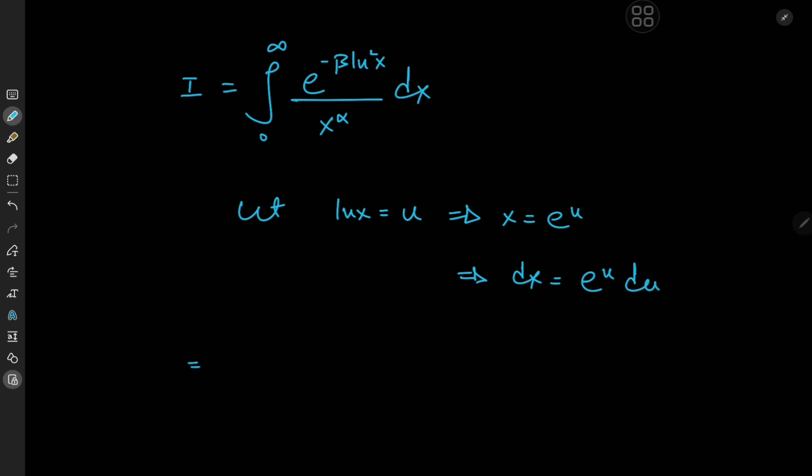Okay, cool. So this implies that the target integral i equals the integral from 0 to infinity. We have x to the negative alpha, which turns into e to the negative alpha times u. Then we have e to the negative beta times u squared. And then the differential element is e to the u du.